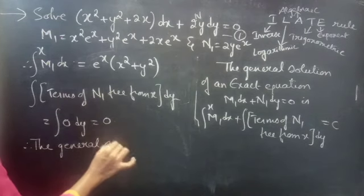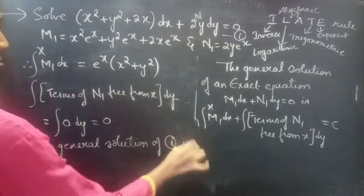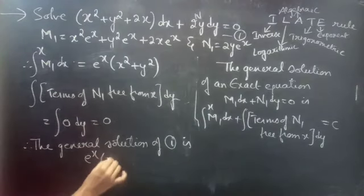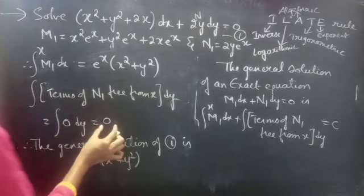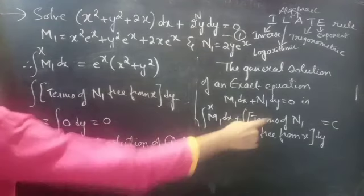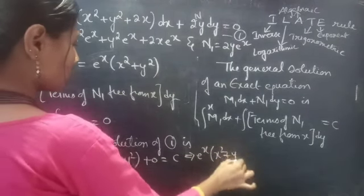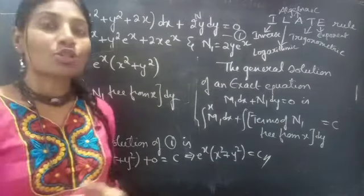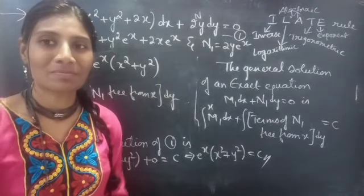Therefore, the general solution of equation 1 is: e^x times (x² + y²) plus 0 equals constant c. So e^x(x² + y²) equals c is the required general solution. So we have seen a problem from a non-exact equation in this video. Hope you understand. We'll see you in the next video. Bye bye!